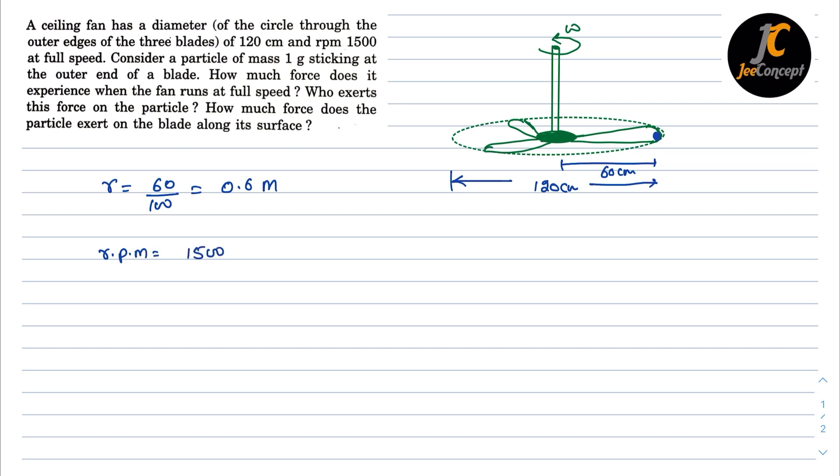1500 revolutions per minute. So let's get the value of omega from it, which is equal to 2πn/60, where n is the number of RPM. You can simply use this formula to get omega from RPM. This will become 2π × 1500/60, that means